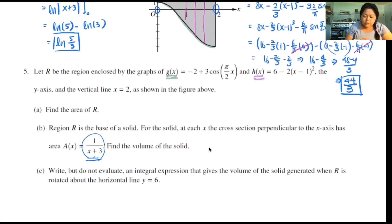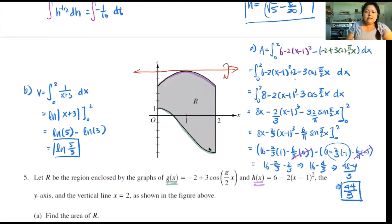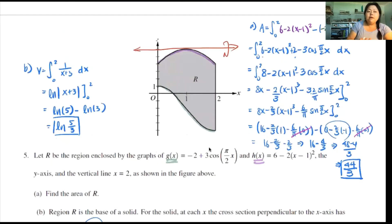Last bit. Write, but do not evaluate an integral expression that gives the volume of the solid generated when R is rotated about the horizontal line y equals 6. So again, looking at this picture here, we have to look at the fact that, hey, where is y equals 6? So y equals 6, 1, 2, 3, 4, 5, 6. Y equals 6 is right here. So you're going to rotate this way. So why do I need to see that? I need to see this so I can see who is my big radius and who is my small radius. So please remember this. Your big radius is from the axis of revolution to the farthest function.